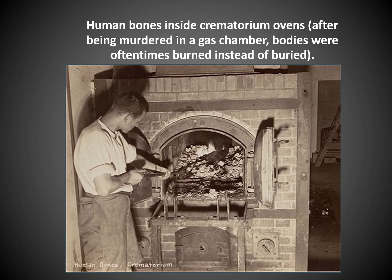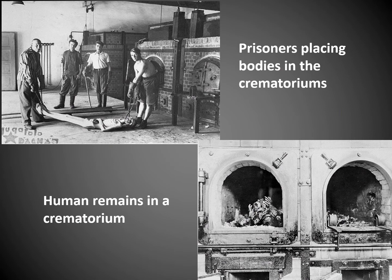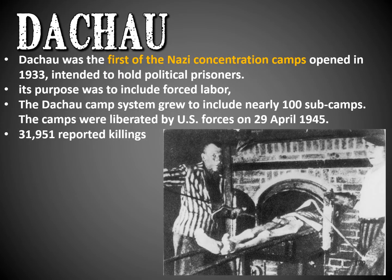Human bones inside crematorium ovens. After being murdered in the gas chamber, the bodies were collected and often burned instead of buried because it was more efficient. They would take the bodies from the gas chambers and cremate them. Other Jewish prisoners were forced to place bodies into the crematoriums as their labor — forced to cremate other Jews, possibly people they had known.